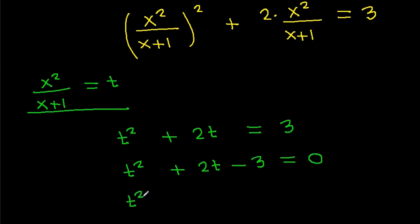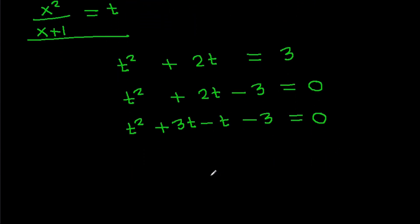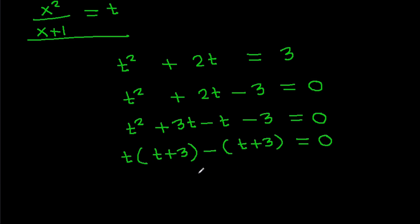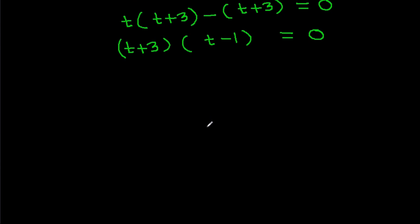Factoring t² + 2t − 3 = 0, we split as t² + 3t − t − 3 = 0, giving t(t + 3) − 1(t + 3) = 0, so (t + 3)(t − 1) = 0. Therefore either t + 3 = 0, meaning t = −3.